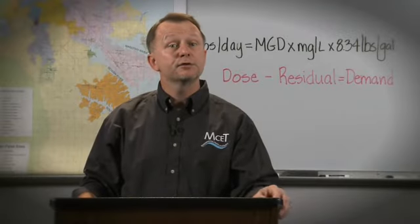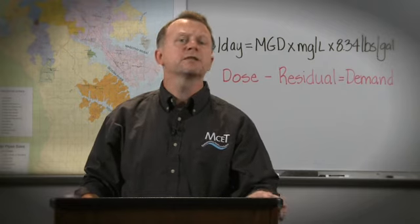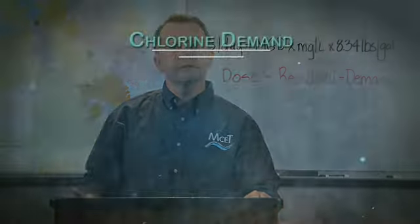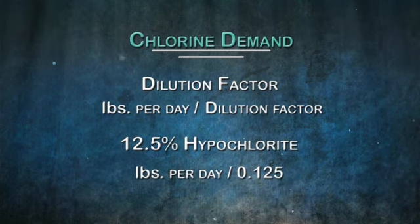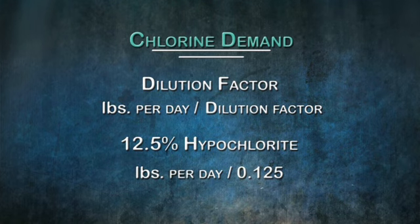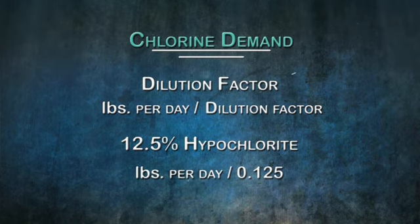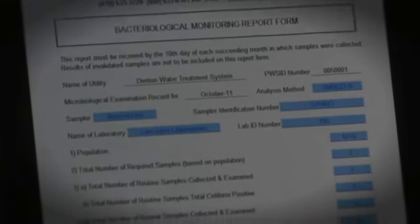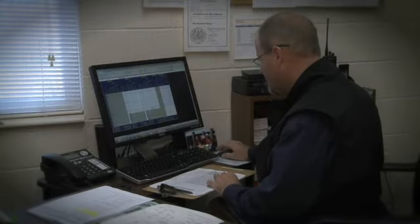Because the formula is for straight 100% chlorine, a dilution factor must be applied when using sodium or calcium hypochlorite. Simply divide the pounds per day by the dilution factor. For example, if you are using 12.5% sodium hypochlorite, then you would divide the desired pounds of chlorine by 0.125 to obtain the pounds per day of sodium hypochlorite required to produce the same dose. As previously discussed, good monitoring and record keeping practices are essential to maintaining adequate disinfection. In addition to the results of chlorine residual and bacteriological monitoring, the water system operator should record the total amount of chemical that is applied to the water each day.